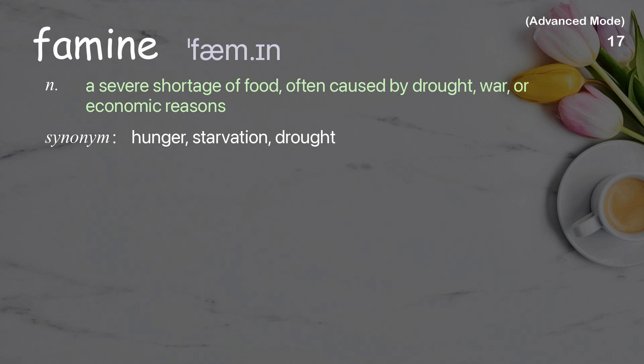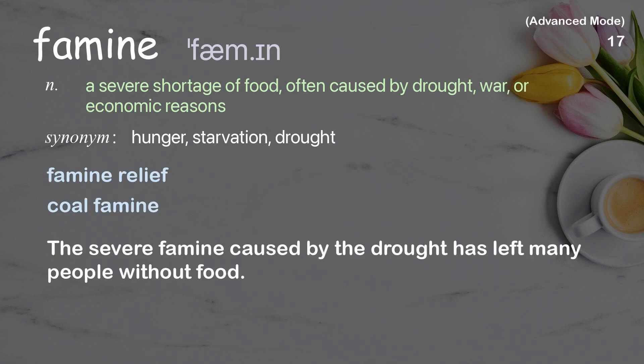Famine: A severe shortage of food, often caused by drought, war, or economic reasons. Examples: Famine relief. Coal famine. The severe famine caused by the drought has left many people without food.